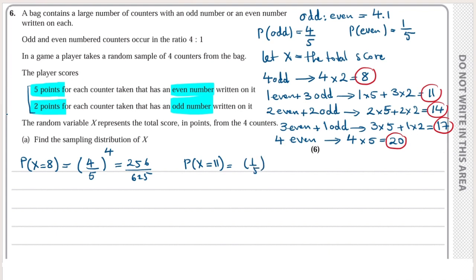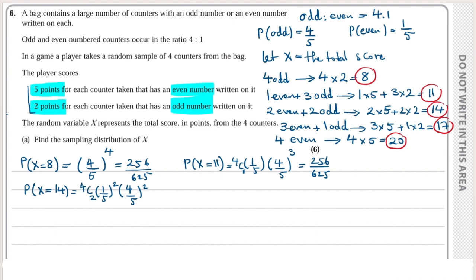P(X=11) is C(4,1) × (1/5) × (4/5)³, which also gives 256/625. P(X=14) is C(4,2) × (1/5)² × (4/5)², and the answer is 96/625.